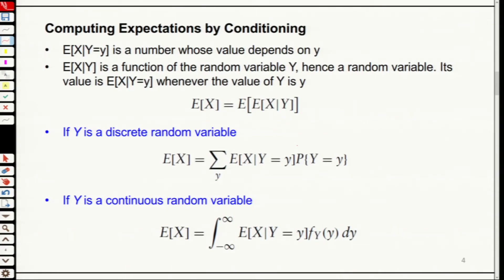So that's why E[X|Y] is a random variable. How do we calculate its expectation? The expectation of this random variable equals E[X]. What you do is: you have E[X|Y] for a particular value of y, multiply by the probability Y equals y, and sum. This is E[E[X|Y]] — the outer sum is the outside expectation over y realizations, and the inside is the conditional expectation.